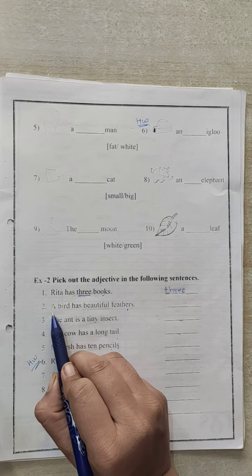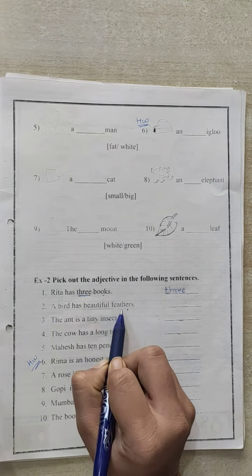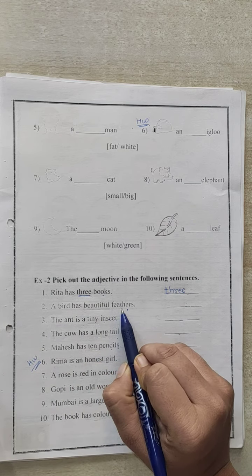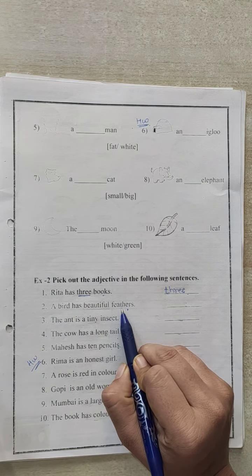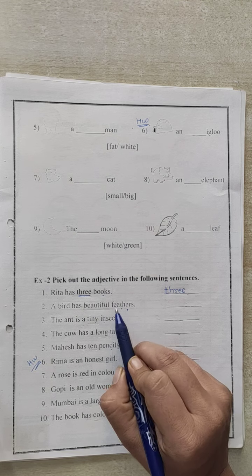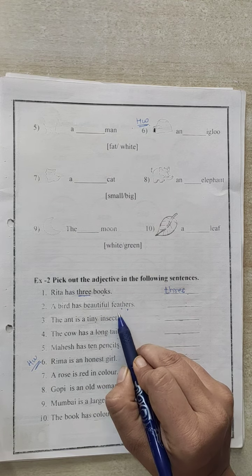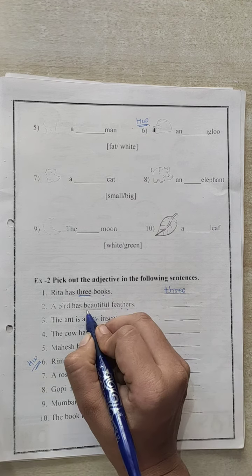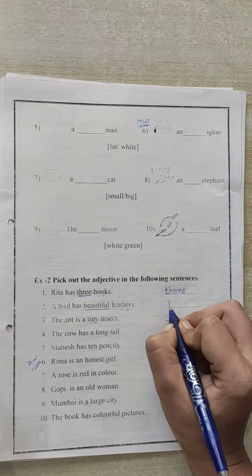Number 2. A bird has beautiful feathers. Now how are the feathers of the bird? Bird has beautiful feathers. Here beautiful word describes the feathers. So it is an adjective. So we have to underline it and write it here in the blanks.